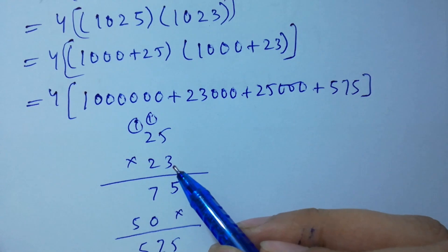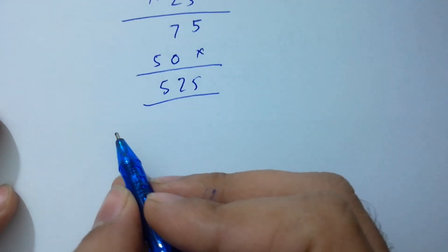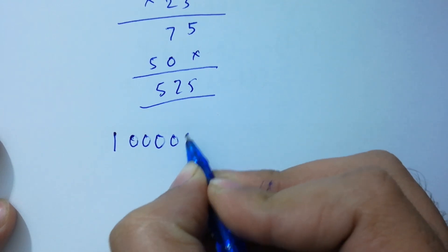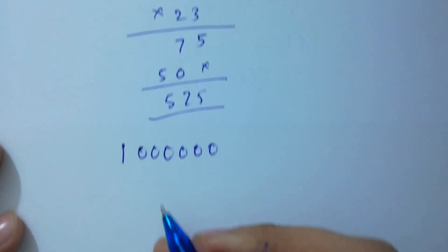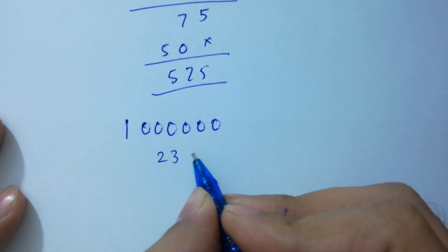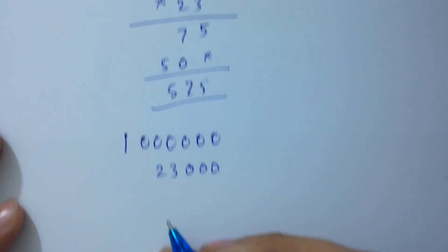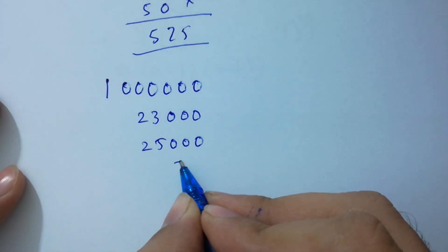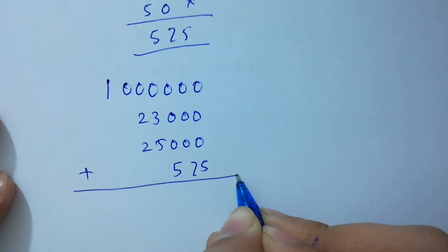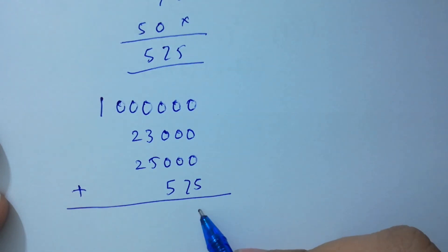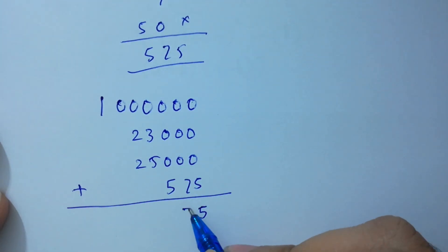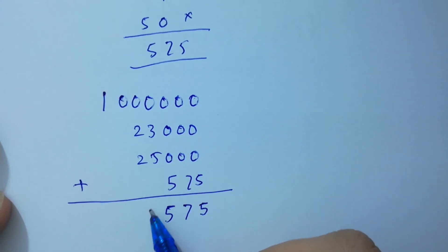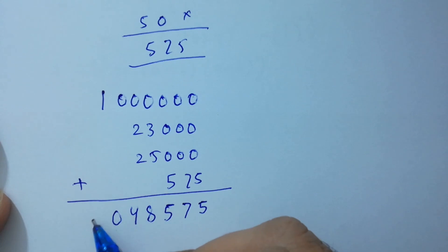In the next step, I am going to add: 1,000,000 plus 23,000 plus 25,000 plus 575. Adding the digits: 0 plus 0 plus 5 is 5; 0 plus 0 plus 7 is 7; 0 plus 0 plus 5 is 5; 3 plus 5 is 8; 2 plus 2 is 4; 0 as it is; and 1 as it is. So the result is 1,048,575.